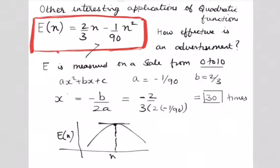So this is the equation we have here. If you compare it with the quadratic equation ax² + bx + c, a is minus 1/90 and b is 2/3. So we use the same rule x equals minus b by 2a, but here x is actually n. n equals minus b by 2a. So when I substitute the values I get n as 30 times.